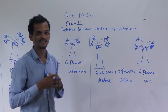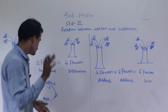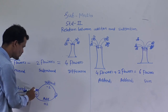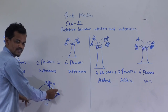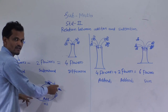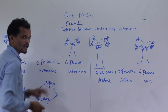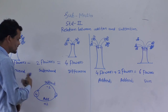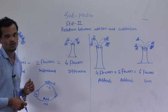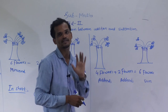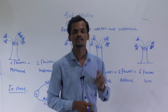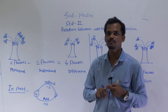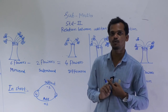In short, we can say if we add 2 into 4, we will get 6. And if we subtract 2 from 6, we will get 4. So this addition and subtraction — both operations are inverse, means opposite.